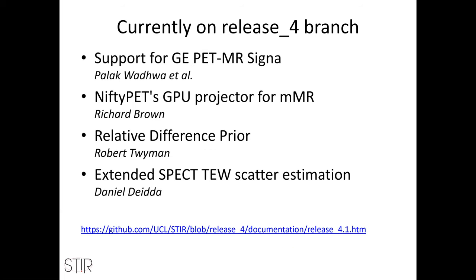We have developments on top of version 4. Richard has implemented a wrapper for the NiftyPET GPU forward and back projectors, currently tied to the mMR. We're not 100% sure it's working correctly — there may be some problems in the NiftyPET code still under investigation, but the wrapper is there. There is also an implementation of the relative difference prior and different energy windows for the SPECT triple energy window scatter estimation. Version 4.1 is not released yet.